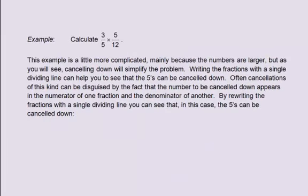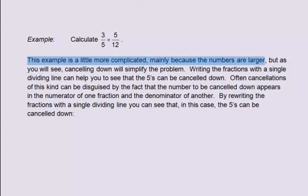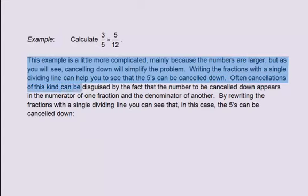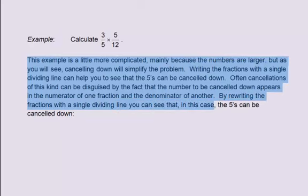For example, calculate 3/5 multiplied by 5/12. This example is a little more complicated, mainly because the numbers are larger, but as you will see, cancelling down will simplify the problem. Writing the fractions with a single dividing line can help you see that the 5s can be cancelled down. Often, cancellations of this kind can be disguised by the fact that the number to be cancelled appears in the numerator of one fraction and the denominator of another.